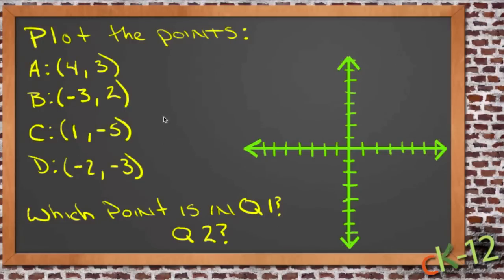Let's get just a little bit of practice plotting points here. I have four points listed, and we're going to take them down one at a time. We need to plot first point A, which is at (4, 3). We need to remember that when you have an ordered pair, which is a coordinate for a point, it's always in the form (x, y).